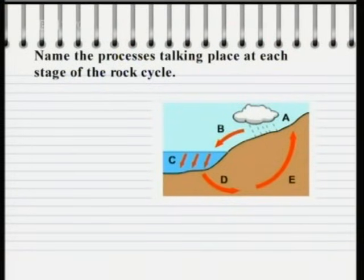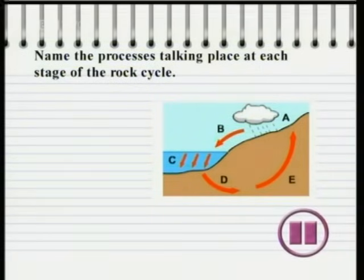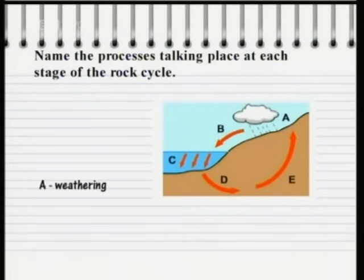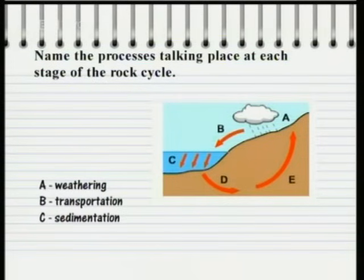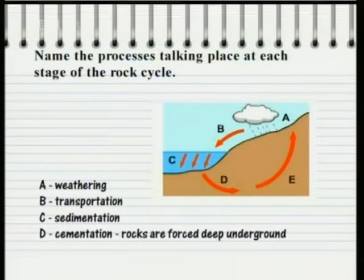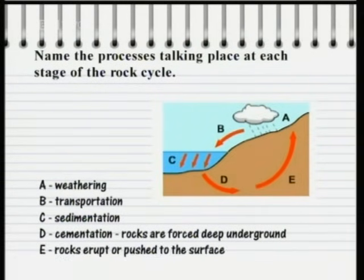Here's a question about the rock cycle: name the process taking place at each of the labelled stages. Process A is weathering. Process B is transportation. Process C is sedimentation. Process D is cementation, where rocks are forced deep underground. Process E is where rocks erupt again or are pushed to the surface by uplift or folding.